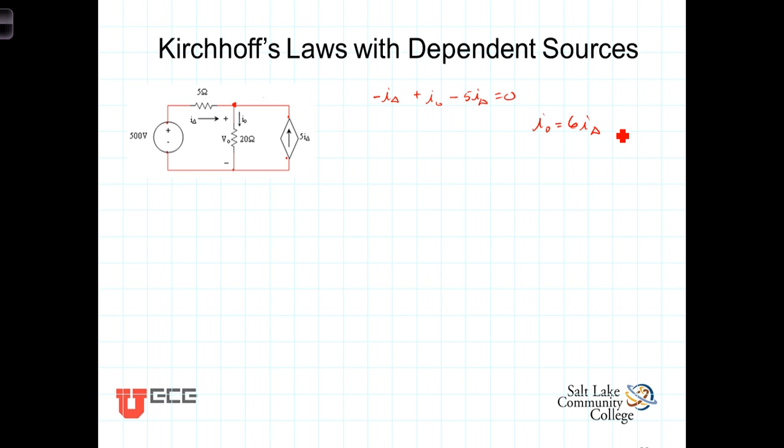We've already pointed out that if you've got two nodes, you'll get only one independent node equation from it. The equation that we would get from this node is basically the same equation that we would get from the other node, only with a minus sign difference. In general, if you've got n nodes, you're only going to be able to get n minus 1 independent node equations from them. That nth equation will always be a linear combination of the other equations.